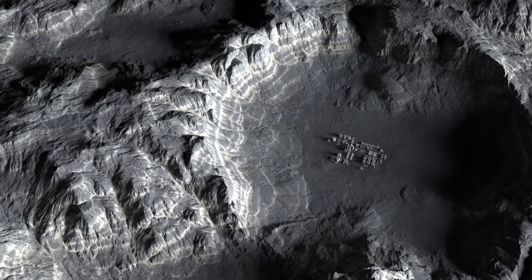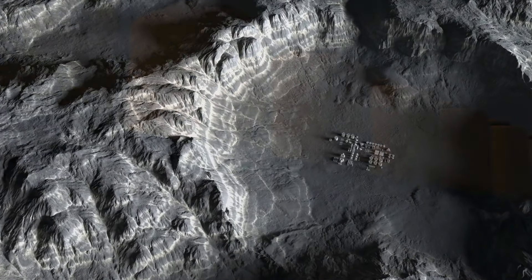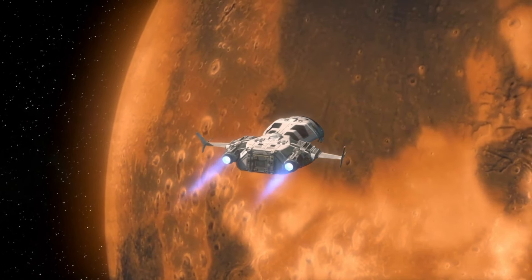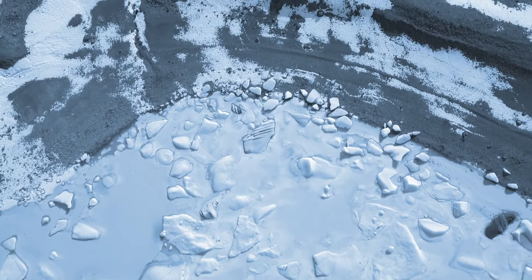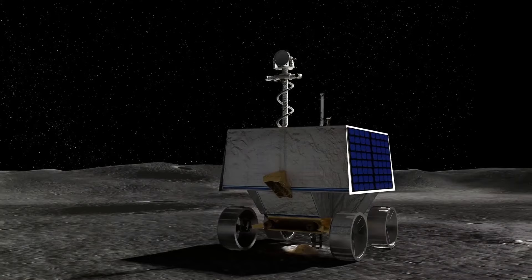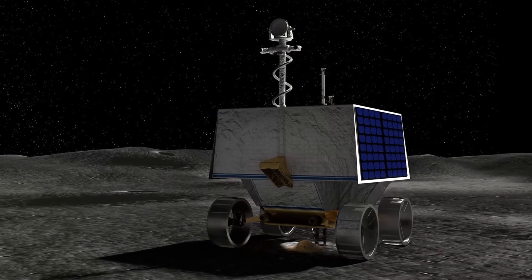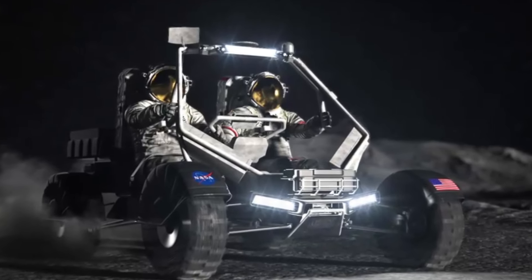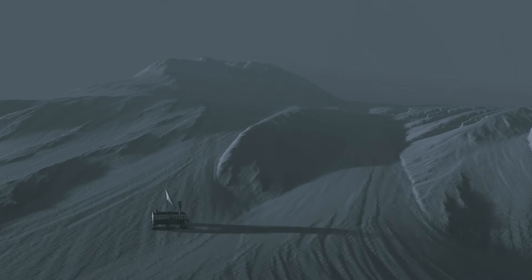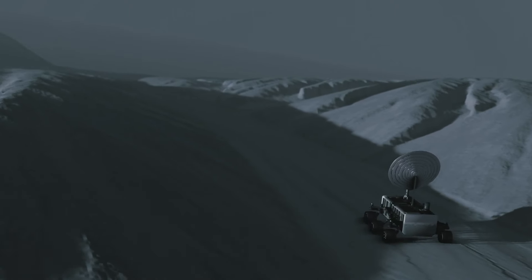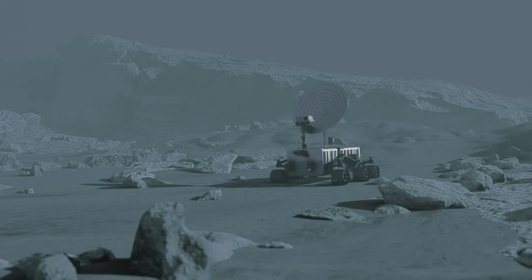Now, why the lunar South Pole? There are two very important reasons. First, building the base camp there will allow astronauts to have periods of continuous light from the sun. The moon is tilted in such a way that its South Pole experiences up to two months of continuous light every year. And all this abundant sunlight can provide the camp with a lot of solar power. At the moment, NASA is trying to design a solar array that could stay more than 30 feet in the air. This way, it'll be able to make the most of the available sunlight.